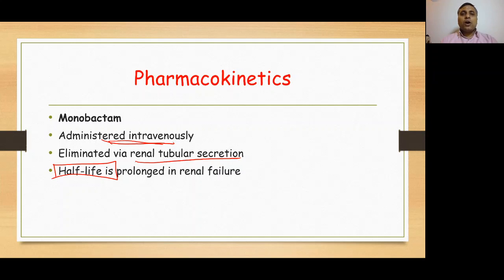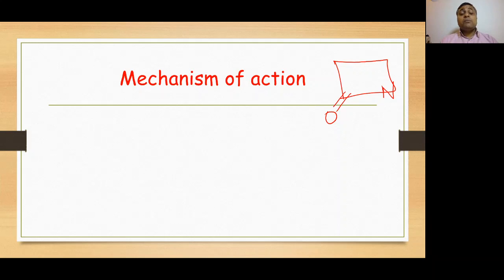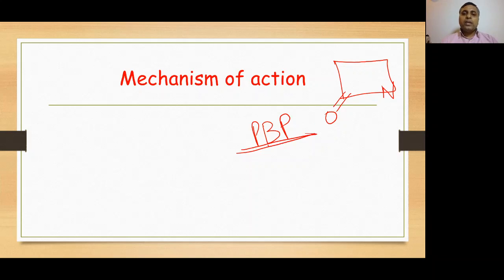Now, mechanism of action: since aztreonam is a beta-lactam antibiotic with a beta-lactam ring in its structure, it has a similar mechanism of action to penicillins, cephalosporins, and carbapenems. These drugs are bactericidal; they bind to penicillin-binding proteins present on the cell membrane, they block transpeptidase enzyme and thus block transpeptidation and cross-linking in cell wall synthesis, and they lead to activation of autolytic enzymes.